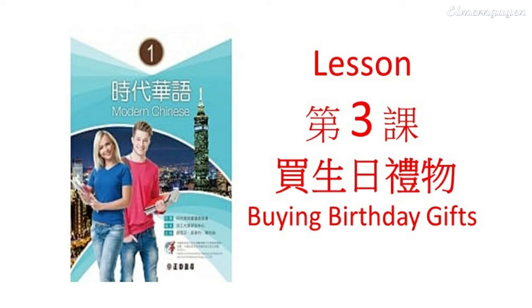语法一：这、那、哪 + 量词 + 名词。这一种笔，哪两本书，哪十个人。1. 你喜欢喝哪种茶？我喜欢喝这种茶。2. 这四支笔怎么样？这四支笔很好看。3. 这两本中文书很新吗？一本很新，一本不新。